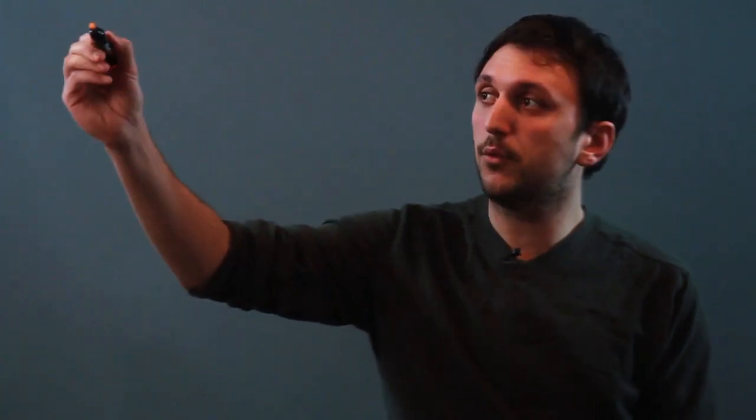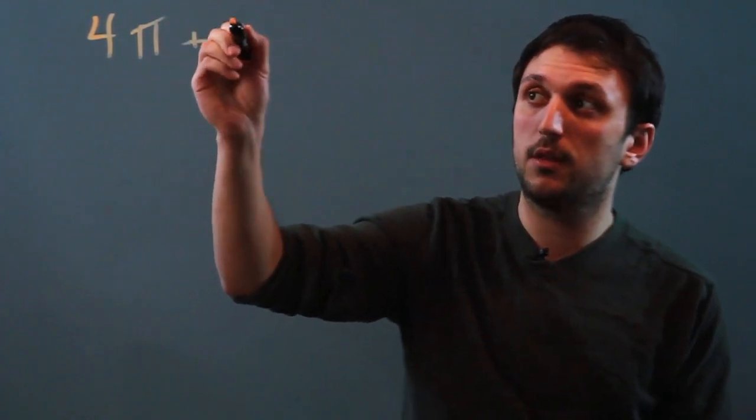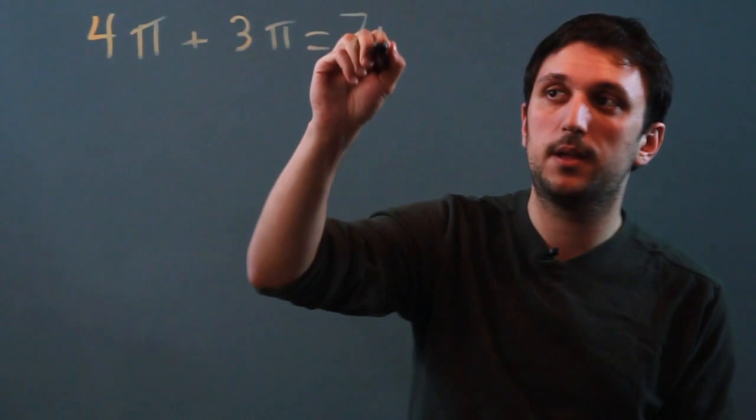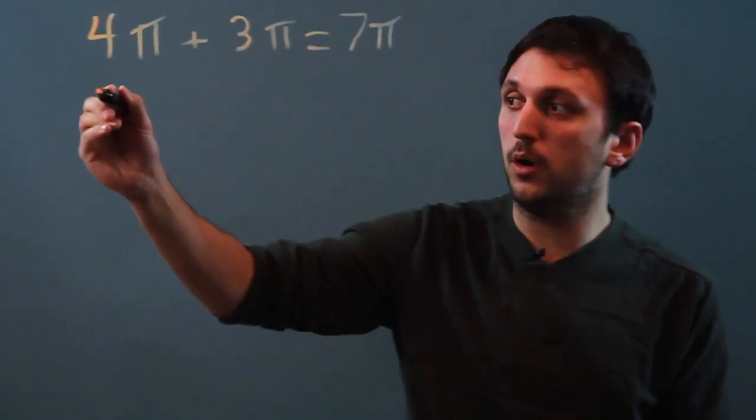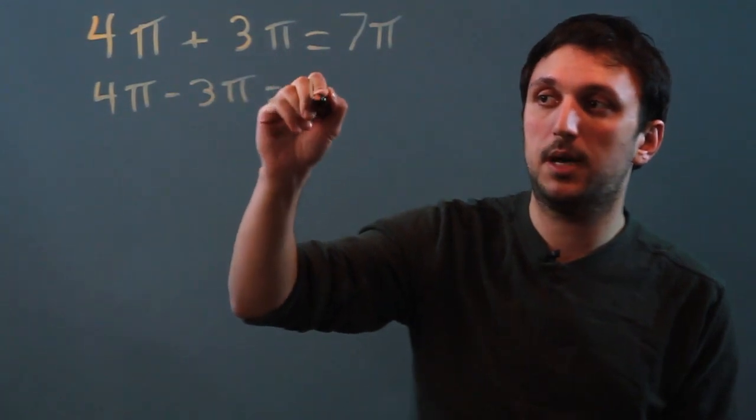So let's look at an example. If we have 4π plus, say, 3π, then we get 7π. Or 4π minus 3π equals π.